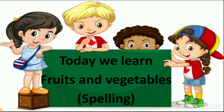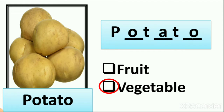Today we learn the spelling of fruits and vegetables and identify which are fruits and which are vegetables. Before that, let's revise what we did in the previous lecture. We saw pictures of some vegetables and some fruits and divided them. The first picture is potato — yesterday we completed the spelling of potato and circled the vegetable, because potato is a vegetable.